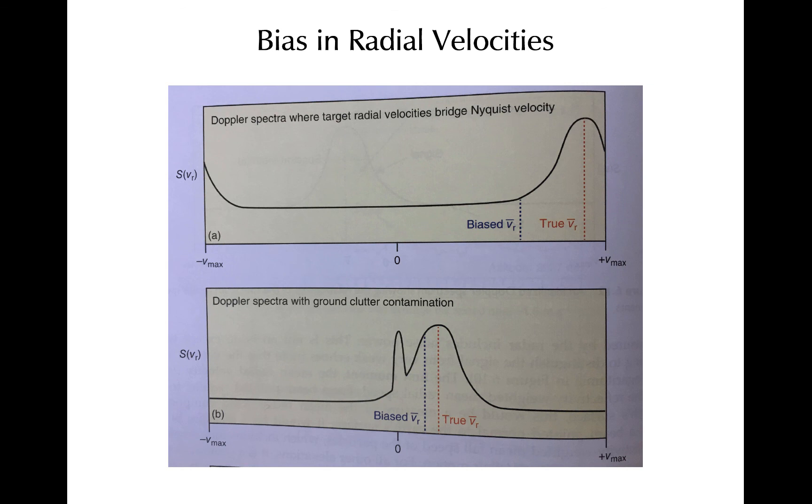So these are just some examples of how the spectral width and being able to view what the Doppler spectrum looks like can help with resolving some biases that might occur in the radial velocities. It also provides a word of caution for interpreting radial velocities in these two types of situations.